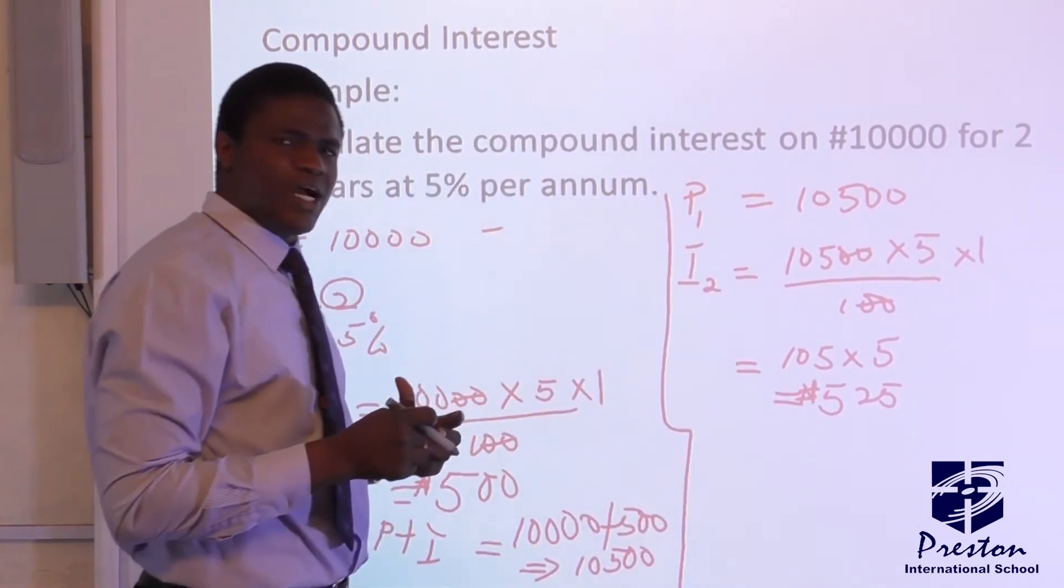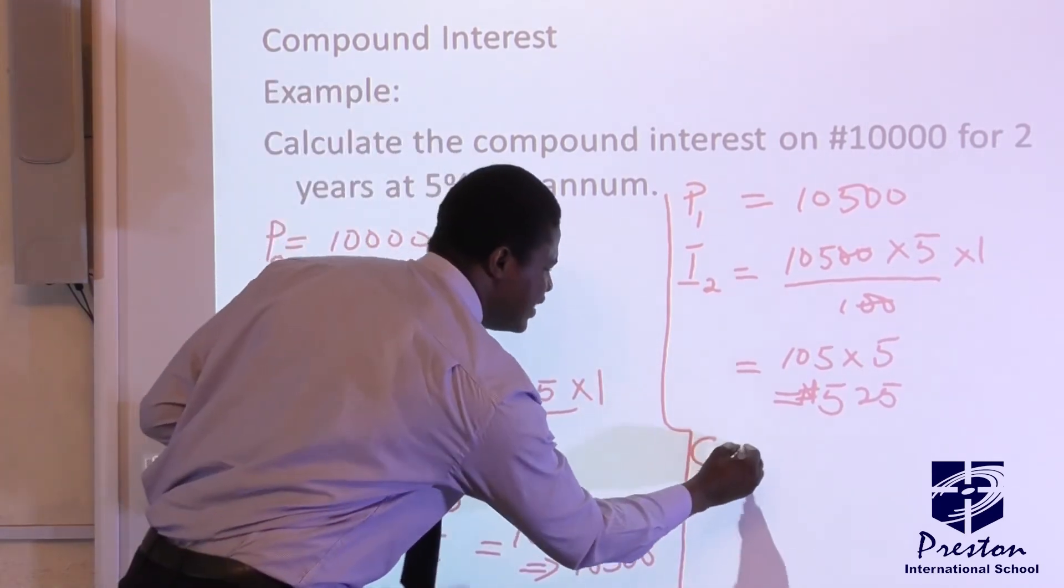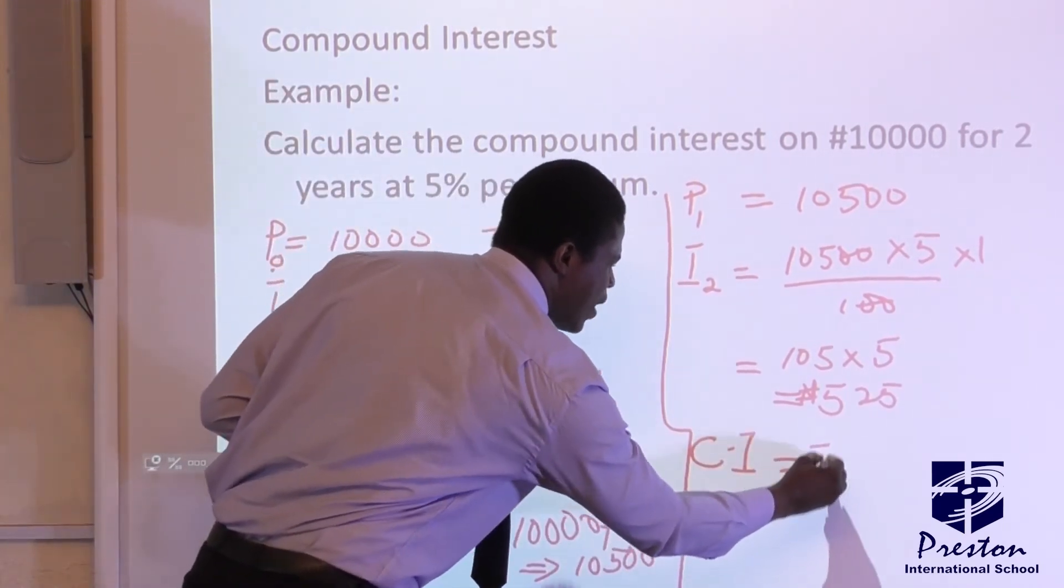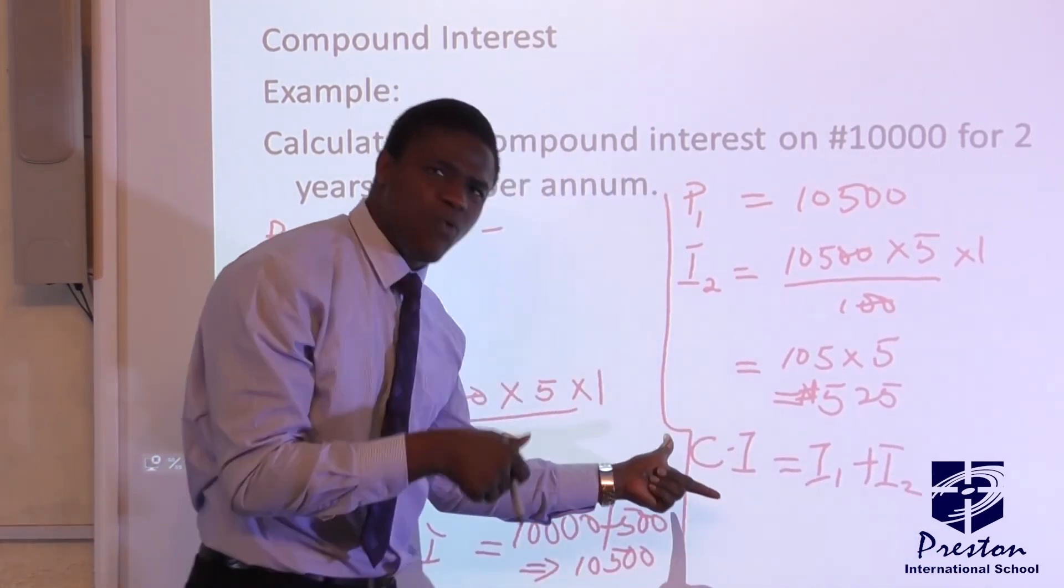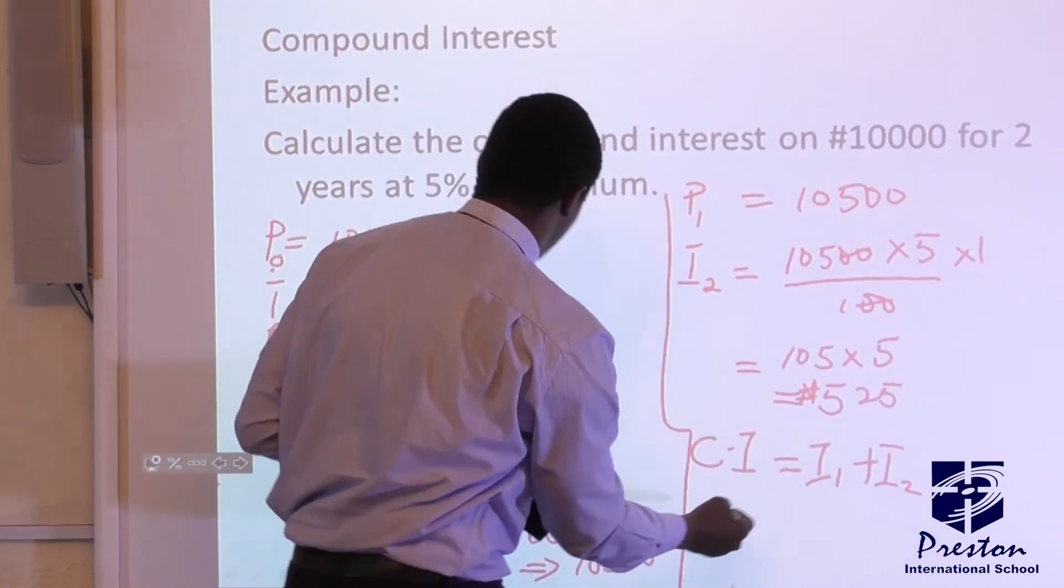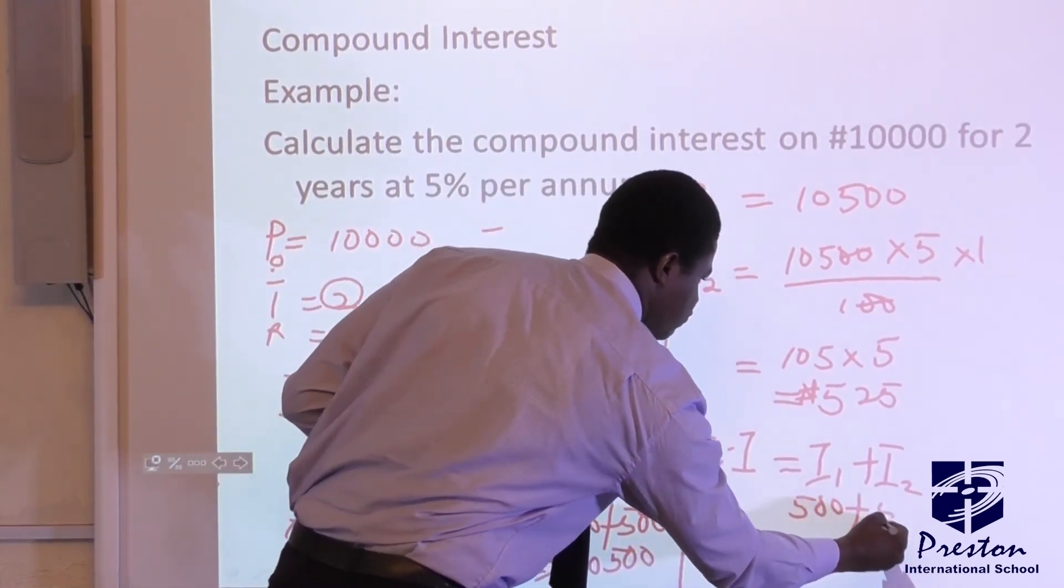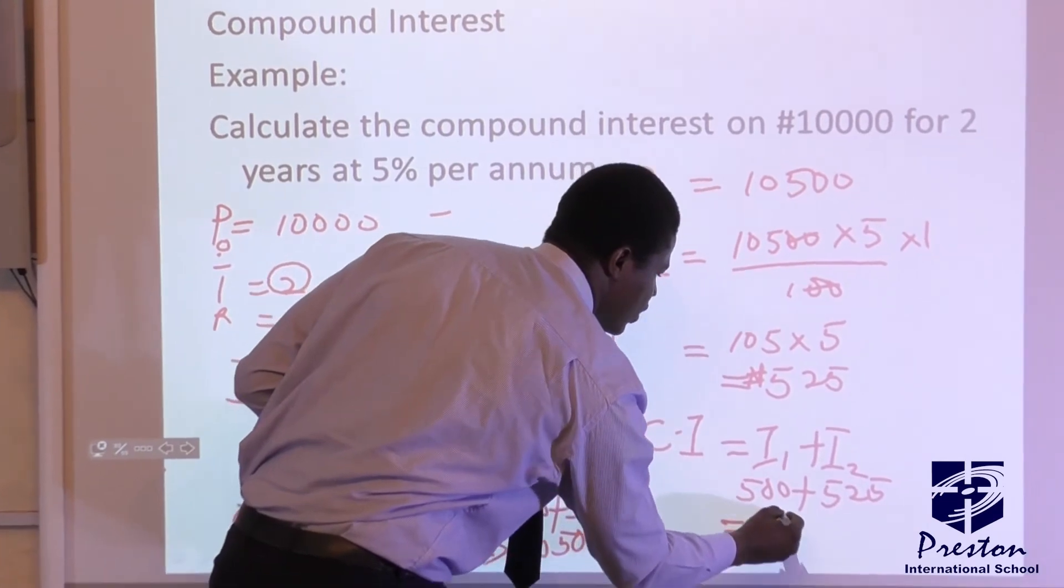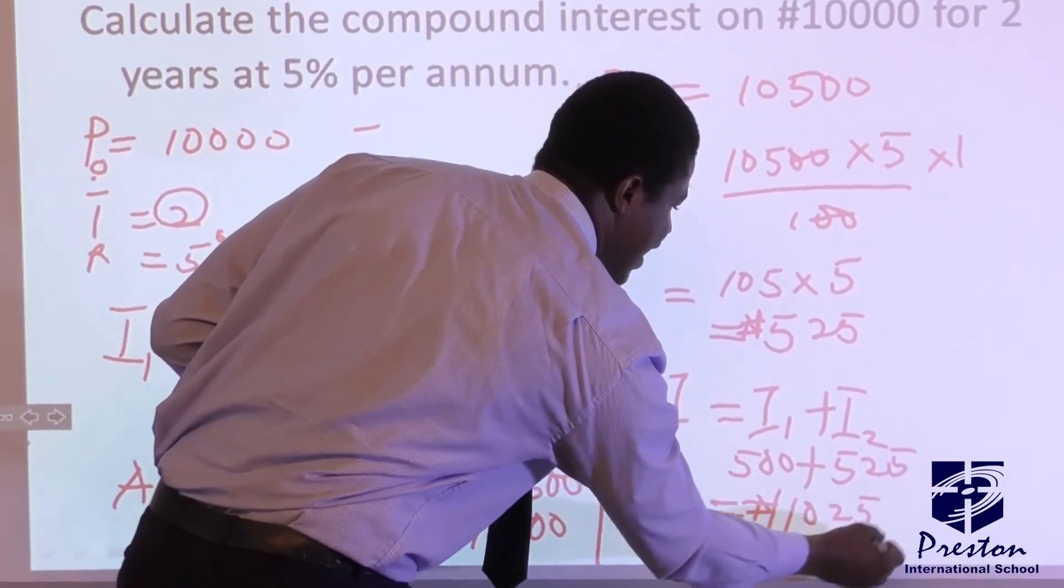So this is what we are talking about. At the end of the second year now, we have our compound interest is equal to I1 plus I2. That is the interest for the year 1 and the interest for the year 2, which will be 500 Naira plus 525. At the end of the day, we have 1025 Naira.